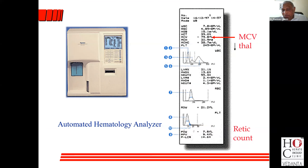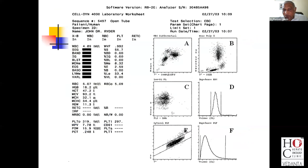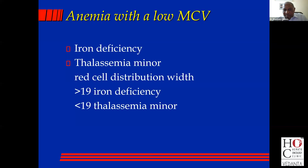This is going to be covered subsequently by a talk on interpretation of hemogram. As I told you, the major causes of anemia with a low MCV are iron deficiency and thalassemia.